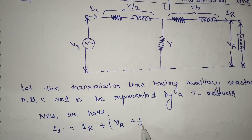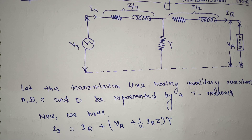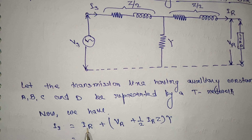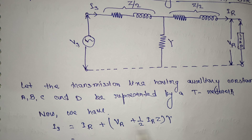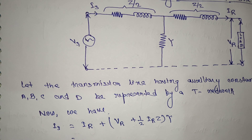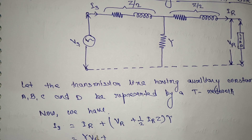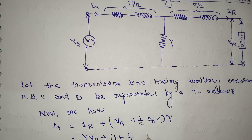IS is equal to IR plus VR plus (1/2) × IR × Z × Y. Now rearranging this equation — you can see IR appears here, so multiplying with Y in the bracket and rearranging: taking IR as a common factor outside, what remains is 1 plus (1/2)YZ. So IS = Y·VR + [1 + (1/2)YZ]·IR.